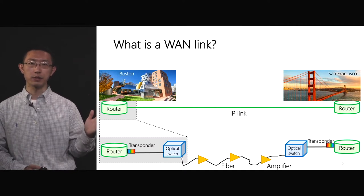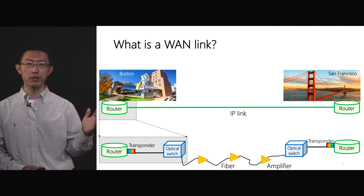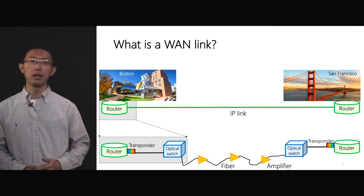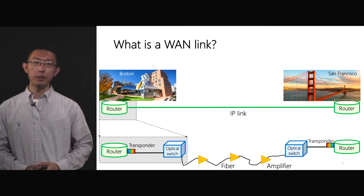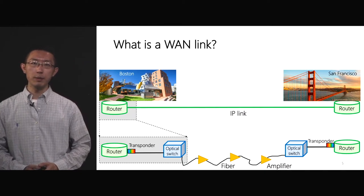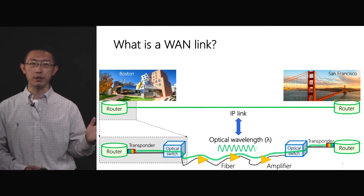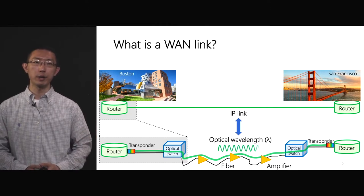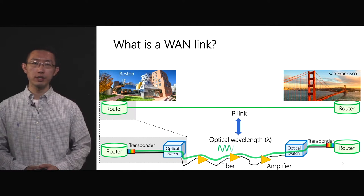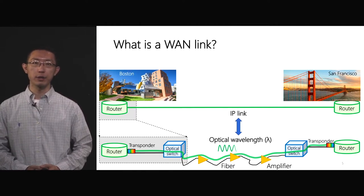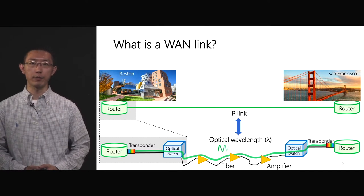After optical transponders, we use the optical switch to add and drop optical wavelengths in optical fiber networks. On the fibers, we place optical amplifiers every 80 km to compensate power attenuation during signal propagation. Therefore, an IP link between Boston and San Francisco is actually a logical connection supported by provisioned wavelengths or lambdas running through a series of IP optical hardware like router ports, optical transponders, optical switches, and optical amplifiers.